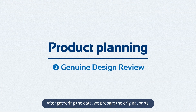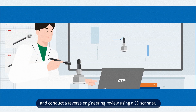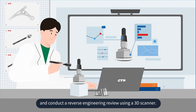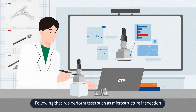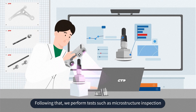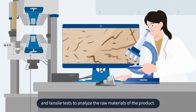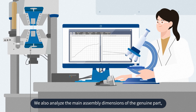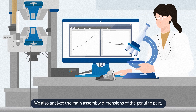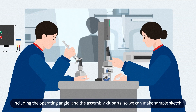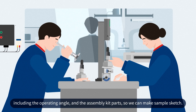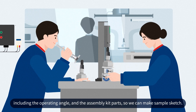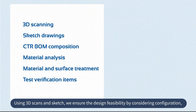After gathering the data, we prepare the original parts and conduct a reverse engineering review using a 3D scanner. Following that, we perform tests such as microstructure inspection and tensile tests to analyze the raw materials of the product. We also analyze the main assembly dimensions of the genuine part, including the operating angle and the assembly kit parts, so we can make sample sketches using 3D scans.